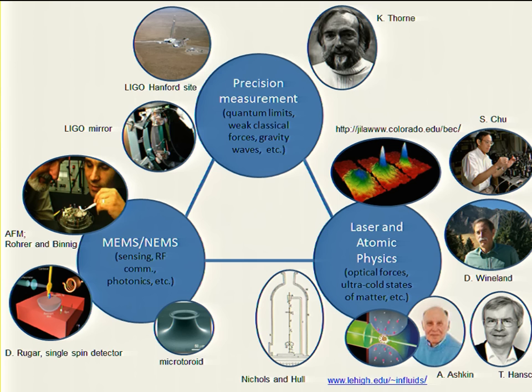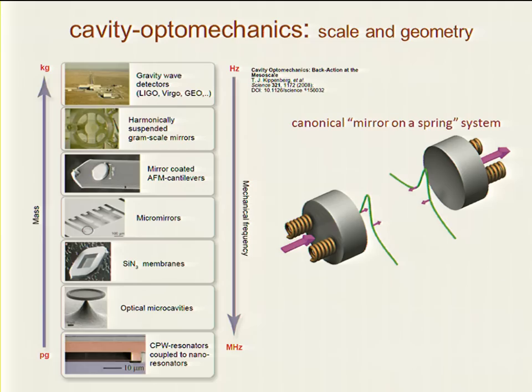These three aspects bring a great deal of richness to the field. There's a wide array of scales involved in what I'll call cavity optomechanics — the field in which people study radiation pressure effects, usually utilizing an optical cavity to build up large optical fields. The scale and geometry covers roughly from gravitational wave observatories with kilogram masses and multi-kilometer interferometers — interested in resonances around a few hertz — all the way down to tabletop versions with gram-scale mirrors.